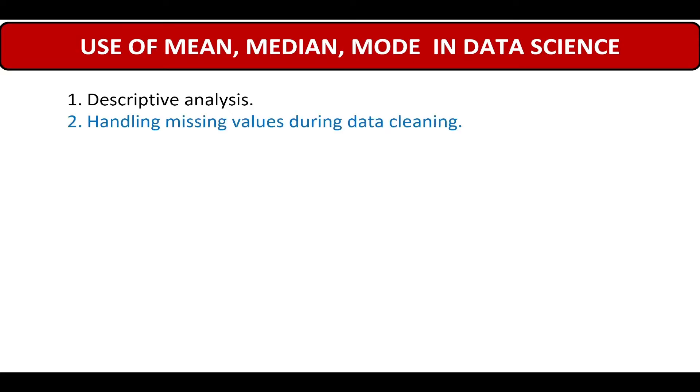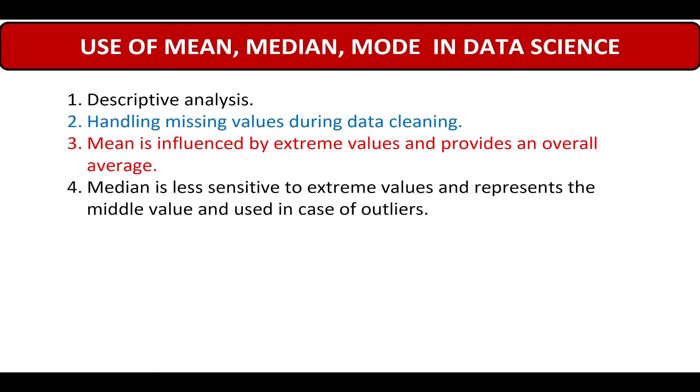Then, all the three, mean, median and mode will be used for handling missing values during data cleaning. Mean provides an overall average. And whenever there are number of outliers, we will be using median. Remember, whenever there are outliers, we will use median. This is a favorite interview question. And mode will be used mostly in case of categorical data.